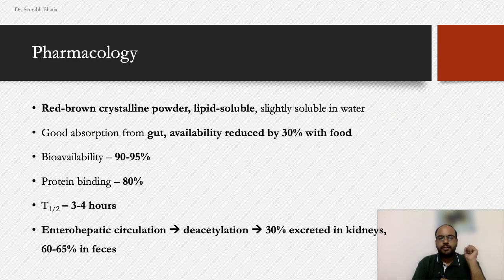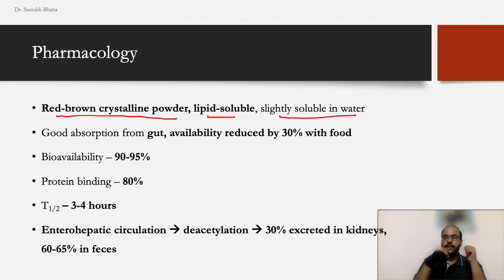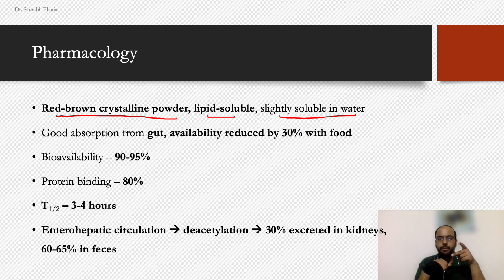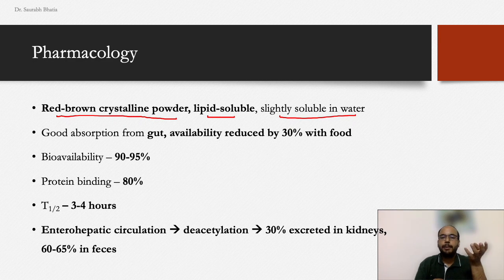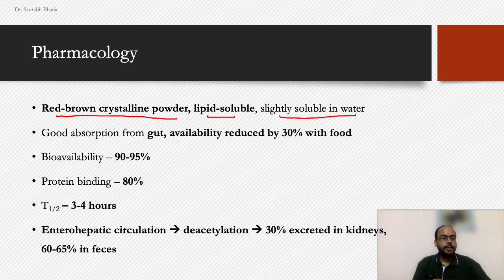Regarding pharmacology, rifampicin is a red-brown crystalline powder which is highly lipid-soluble and only slightly soluble in water. Interestingly, like Dapsone — which we learned was derived from dye research — rifampicin is also a very colorful compound. All anti-leprosy drugs have some relation to colors.